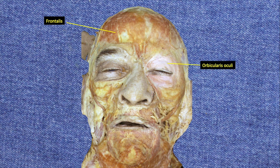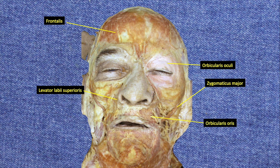The orbicularis oculi closes the upper lid, and if it is paralyzed, the cornea may become dry and ulcerated. The levator labii superioris and the zygomaticus major help us snarl, while the orbicularis oris allows us to pucker our lips. The depressor anguli oris and the mentalis let us show displeasure by allowing us to turn our lower lips outward in a frown.